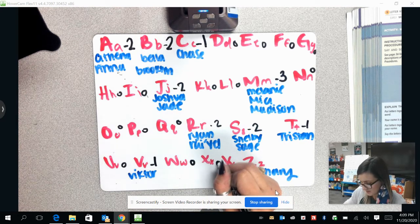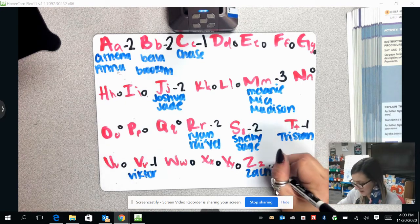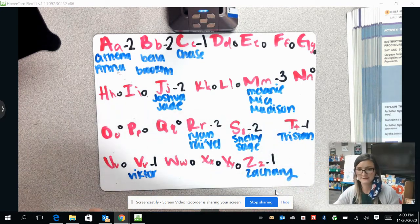Zero for W. Zero for X. Zero for Y. And under Z, we have Zachary. That is one person for letter Z.